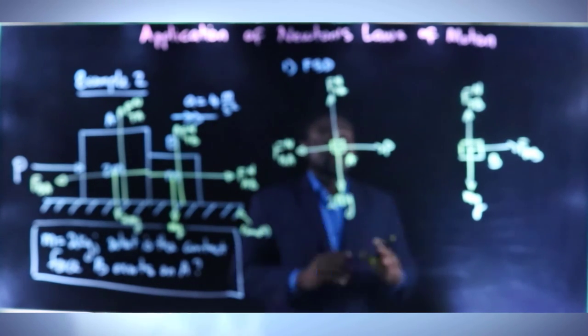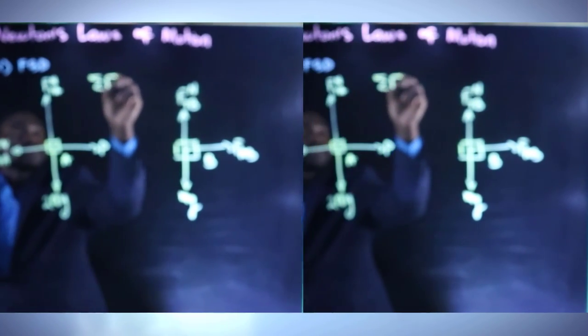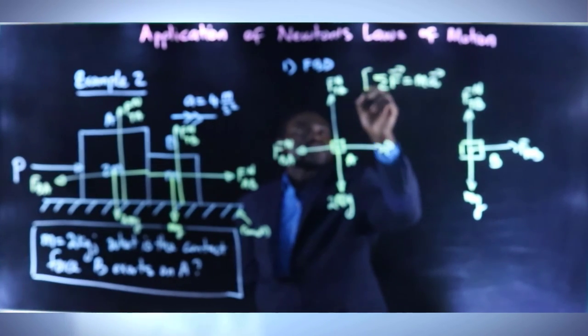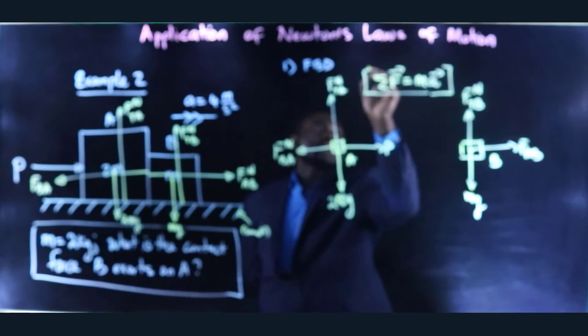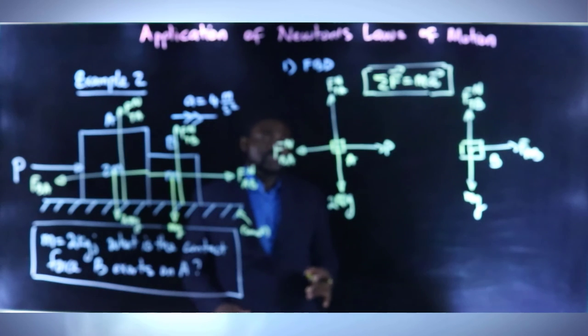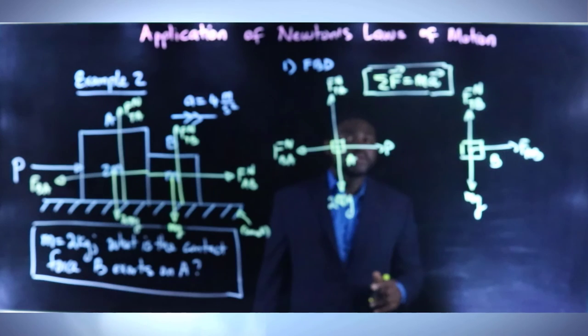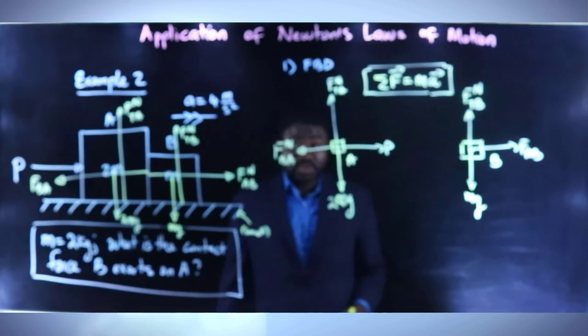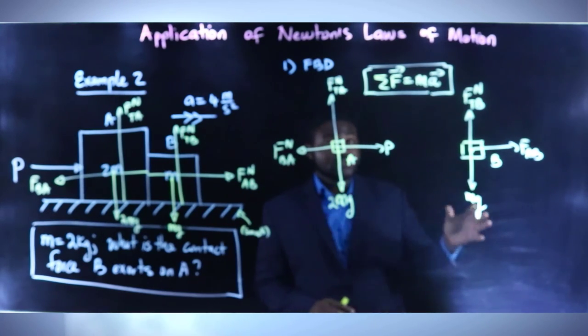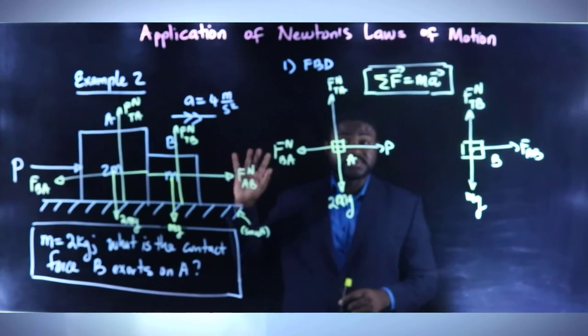So, having drawn our free body diagram, it is about time we apply F equal to MA. The net force acting on the blocks is equal to the mass of the system or the block multiplied by the acceleration of the system or the block. So, here is the deal. We will apply Newton's second law for A separately. And we will apply Newton's second law for B separately. If you can get this, you will always get the problems correctly.